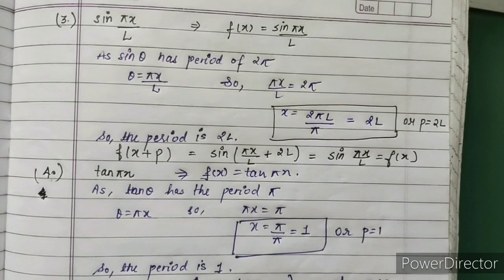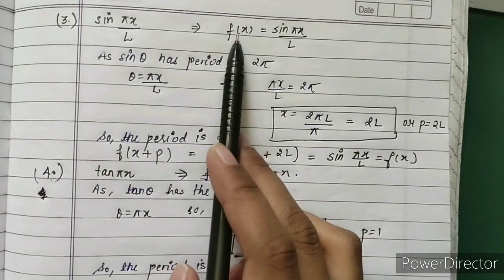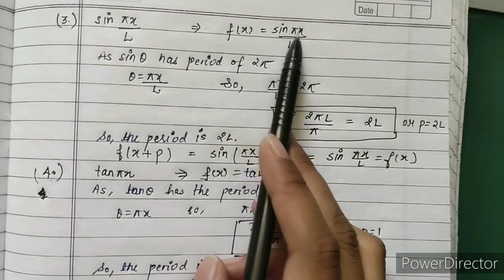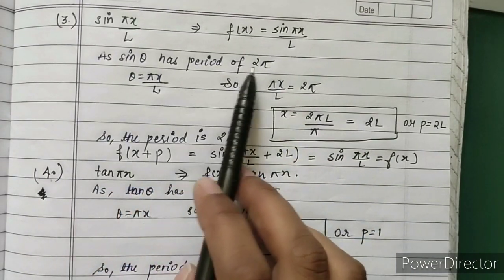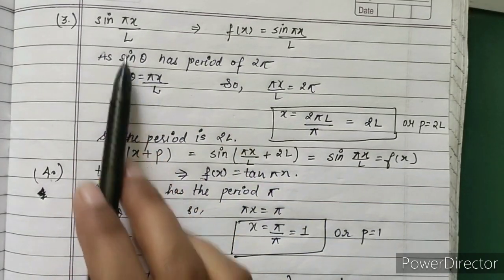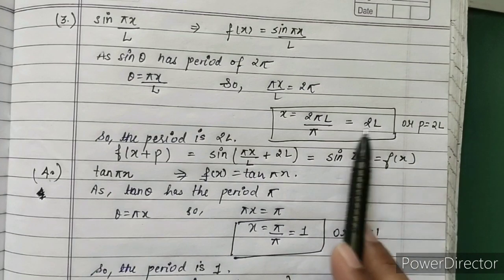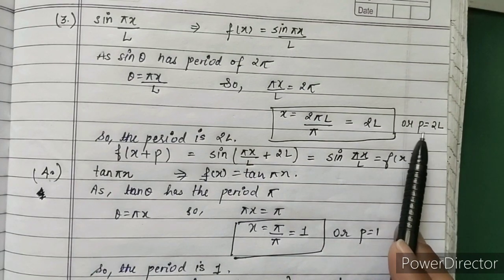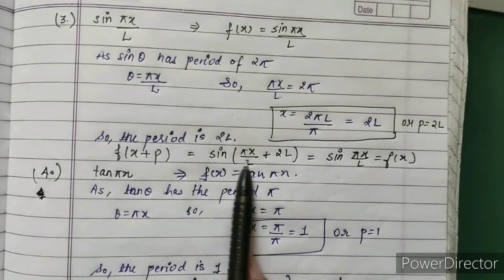Another example is sin(πx/l). Here f(x) = sin(πx/l). Since sin(θ) has a period of 2π, theta equals πx/l. We equate πx/l = 2π, so x equals 2l. The period is 2l.